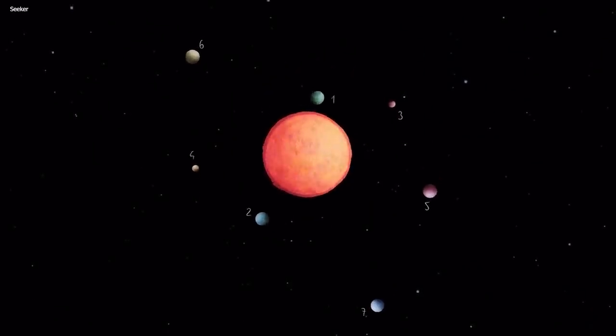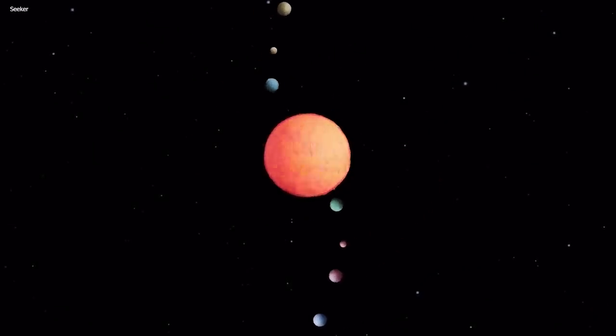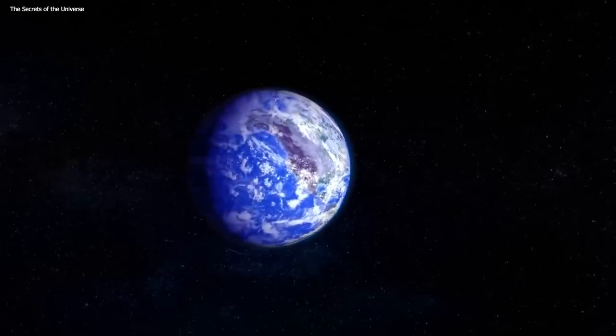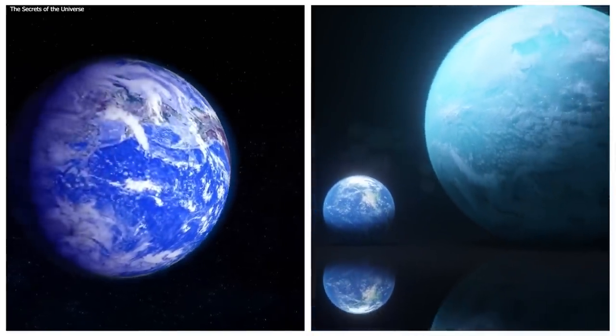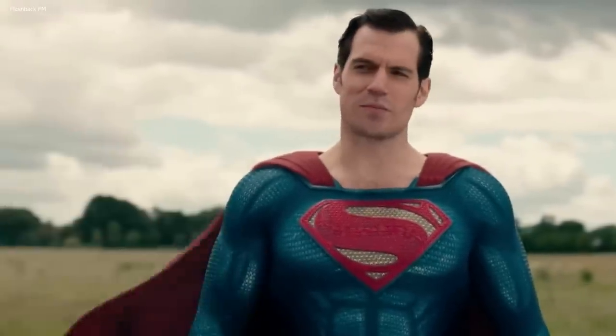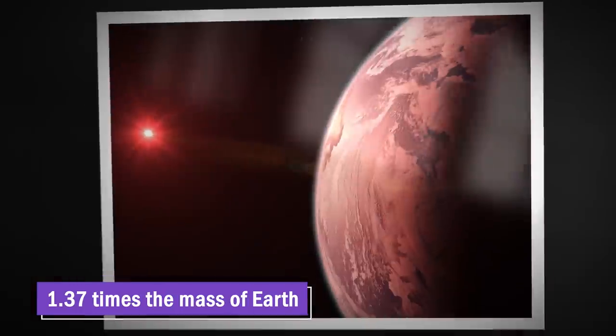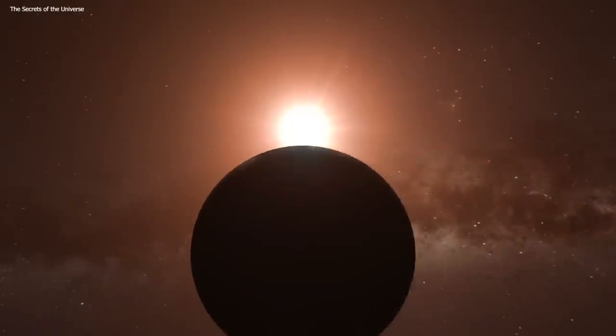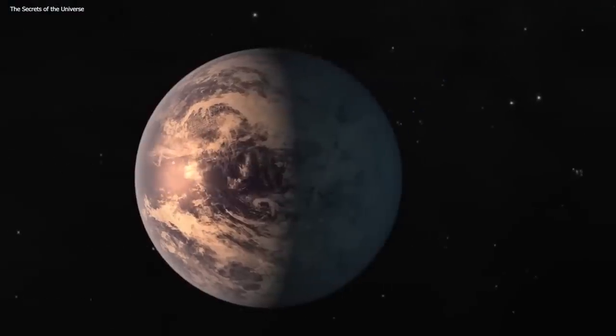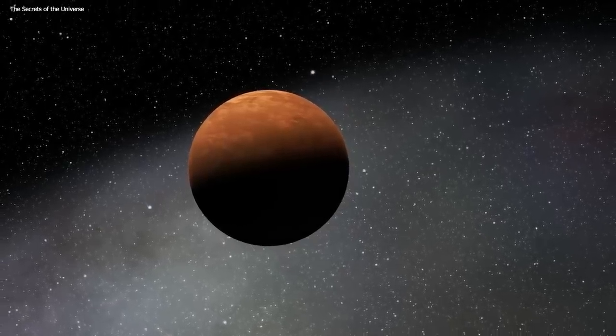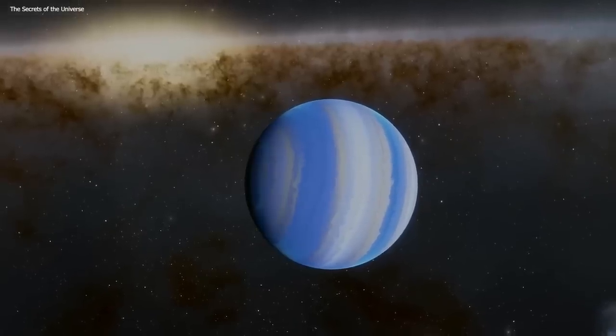So first off, what's TRAPPIST-1b? It's a super-Earth exoplanet, which is essentially an astronomy way of saying it's kind of like Earth, but, well, super. It's not Superman or anything, but it is larger than our home planet. In fact, it's about 1.37 times the mass of Earth and 1.12 times the radius. But despite its size, it's still smaller than the likes of Uranus and Neptune, our system's ice giants.